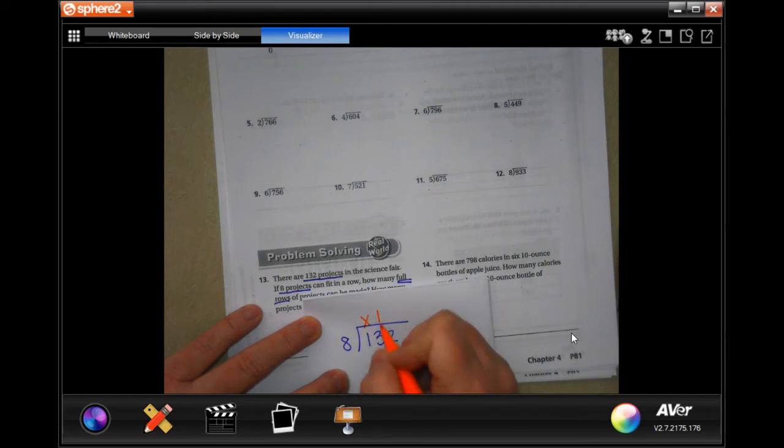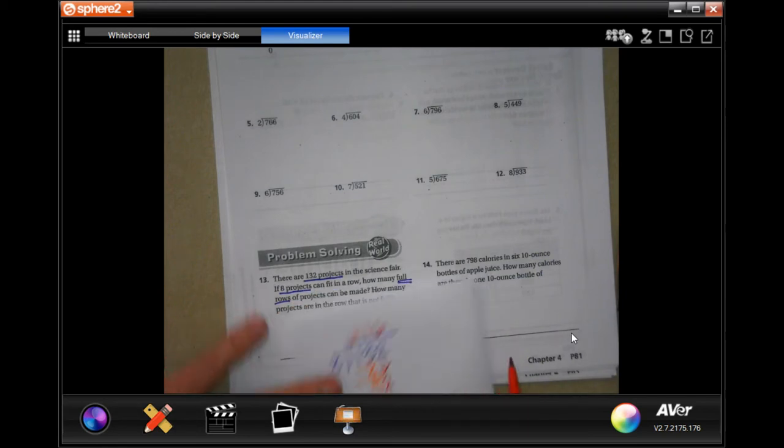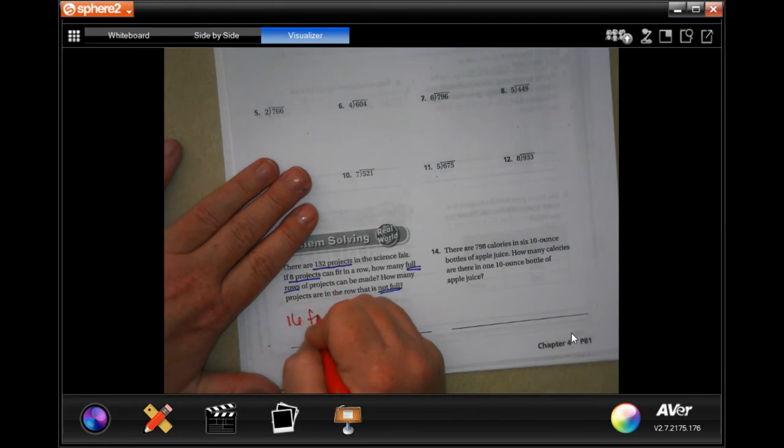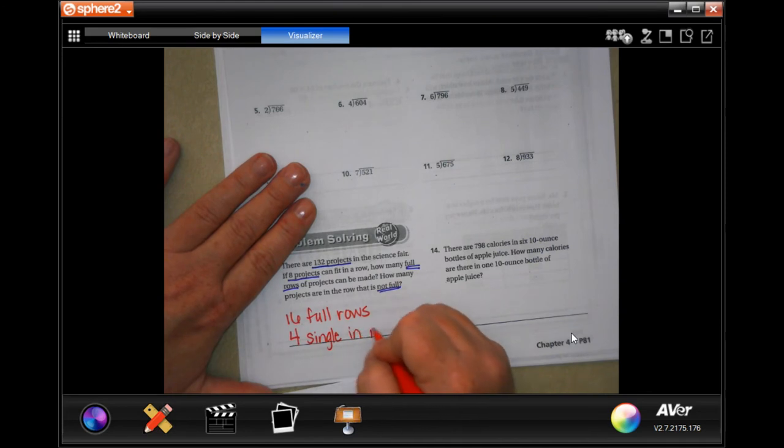Eight will not go into one placeholder. Eight will go into 13 one time. One times eight is eight. Subtract, get five. Five is smaller than eight. So I'm going to bring down my two. Eight will go into 52, six times. Six times eight is 48. Subtract, get four. So I will have 16 full rows and four singles in not full row.